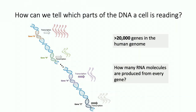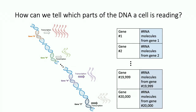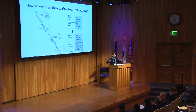How can I tell which part of the DNA a given cell is expressing? The problem is fairly complicated because there are not one or two genes — there are about 20,000 genes in the human genome. What I'd like to know is how many RNA molecules are produced from each and every gene. So essentially, I want a table where for every gene, I know how many RNA molecules are produced from that gene in that specific population of cells.